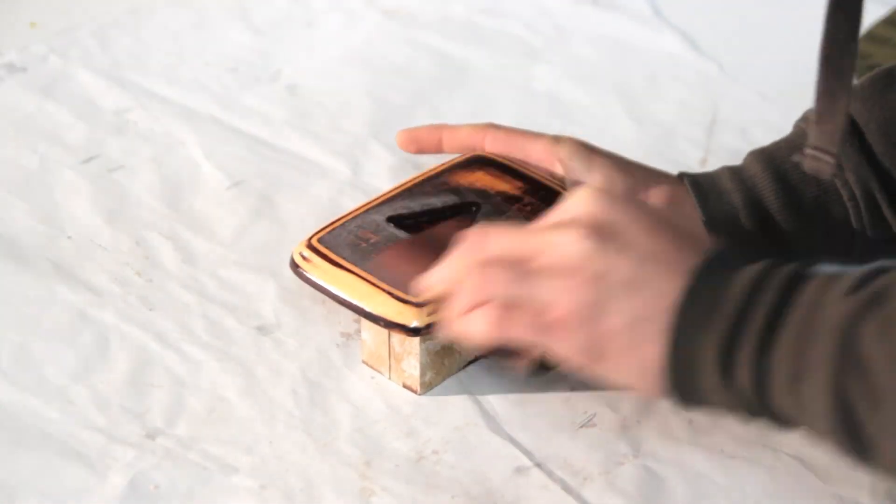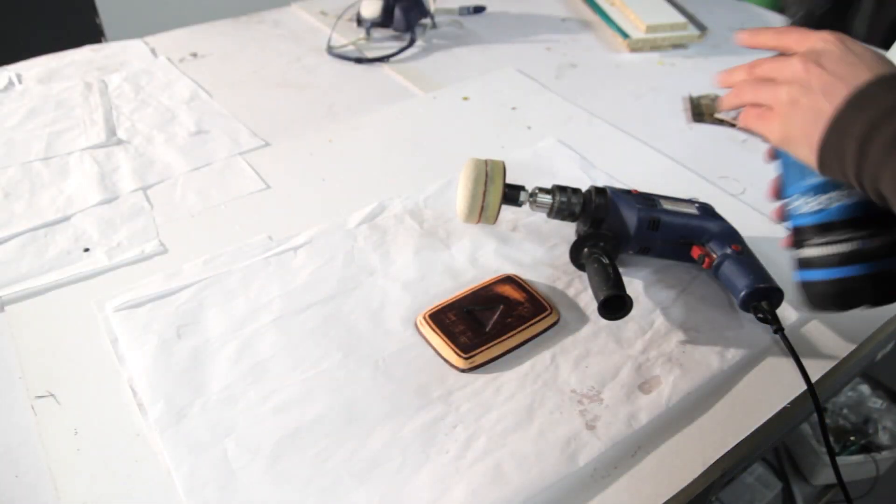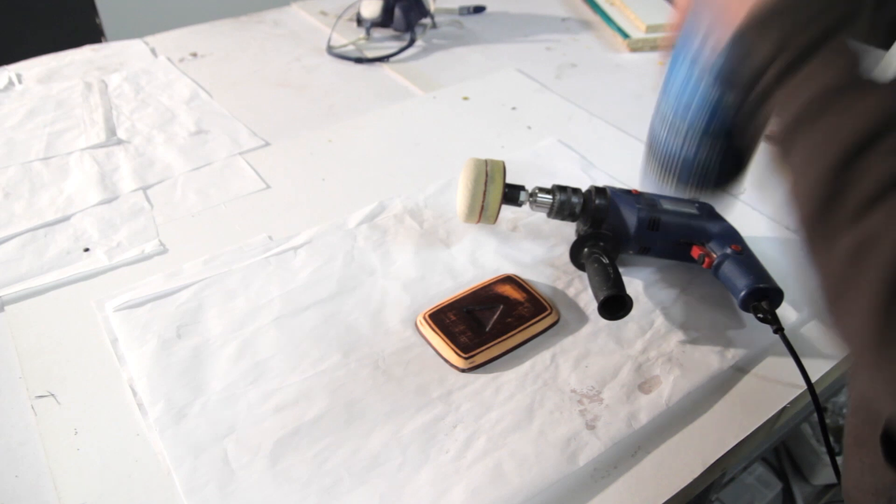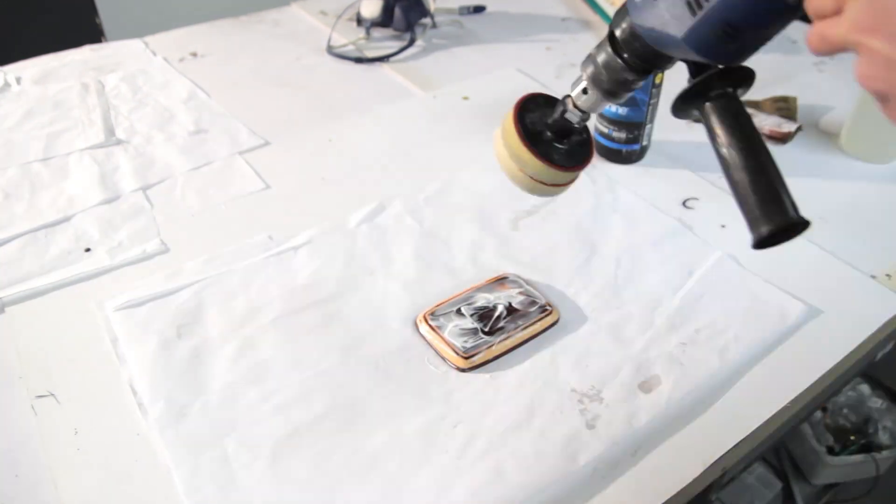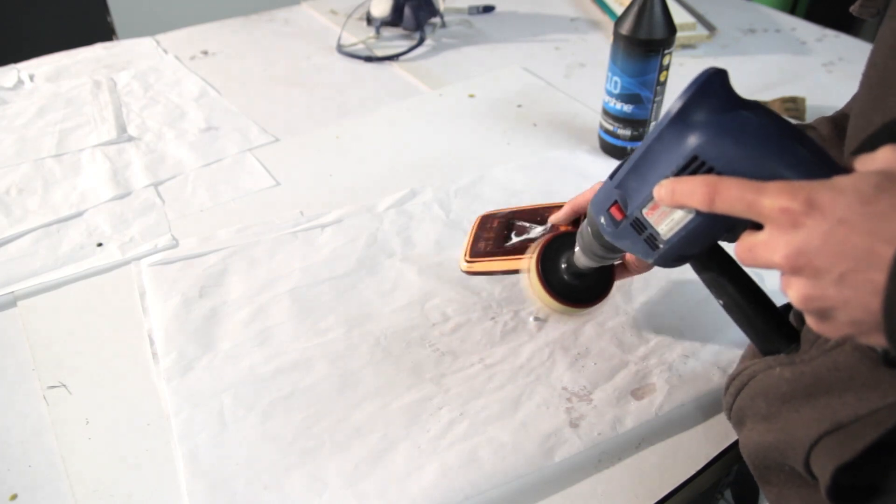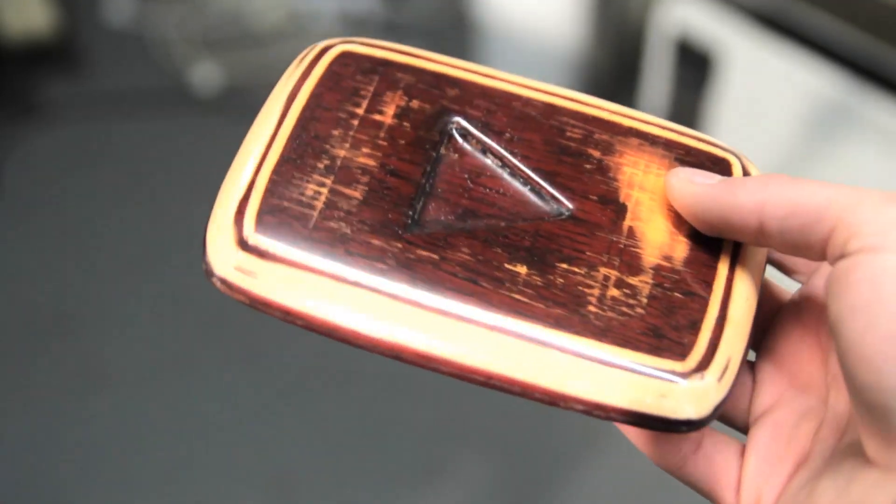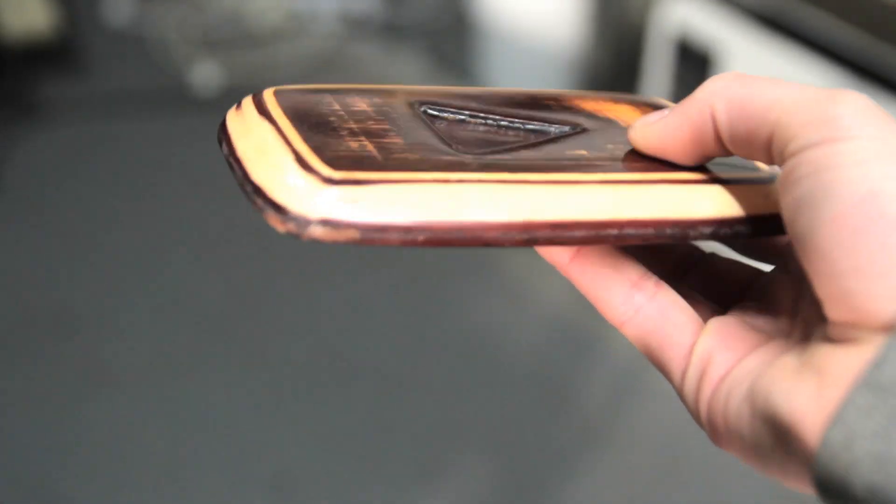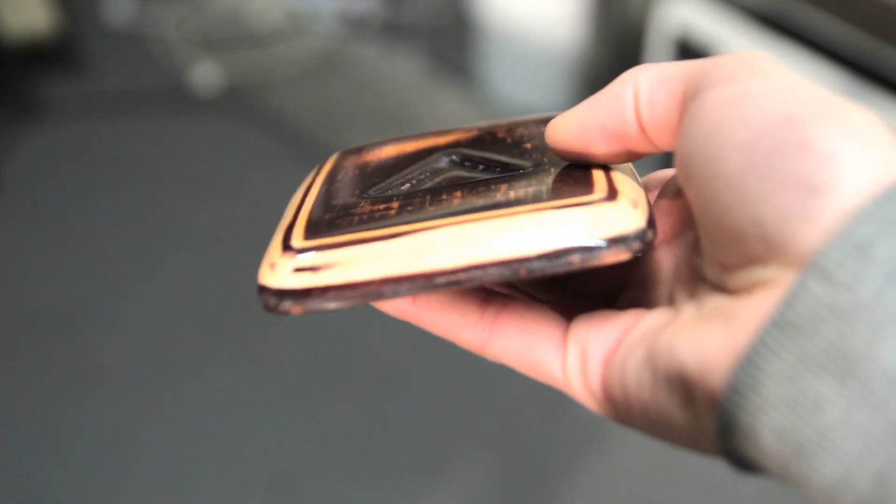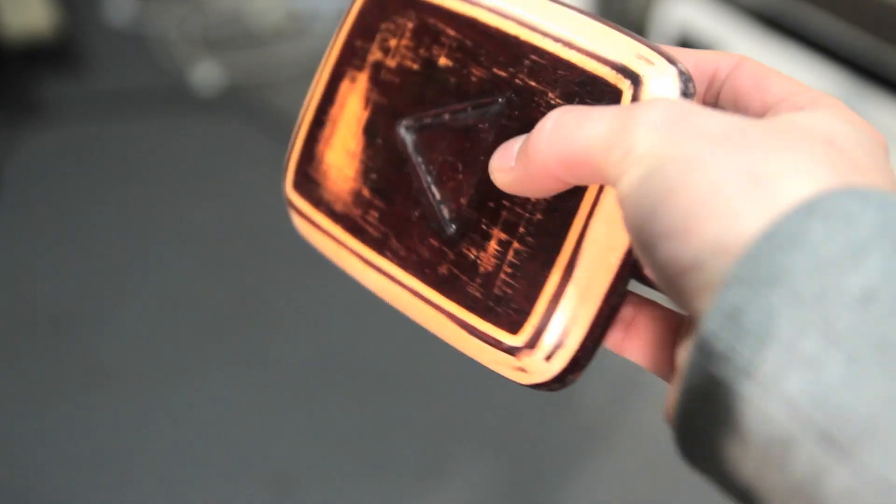Back to sanding to get the mirror gloss finish we're looking for. I'm using 600 grit and then up to the polishing compound. I'm using the fine compound from Polar Shine. As you can see there are still some defects in it, but they're minor.